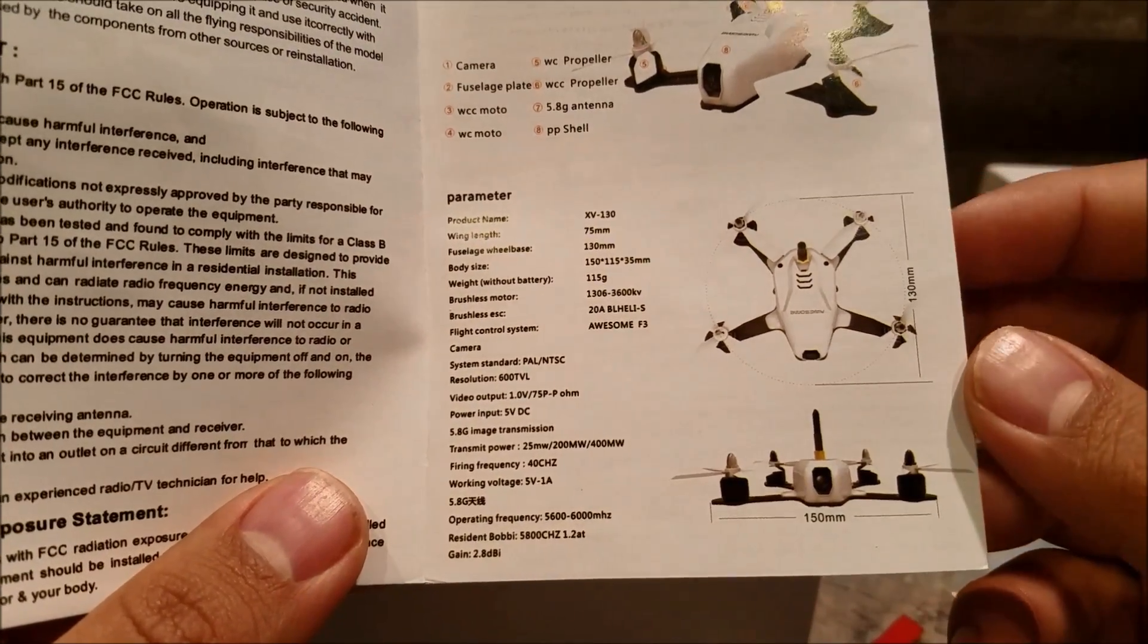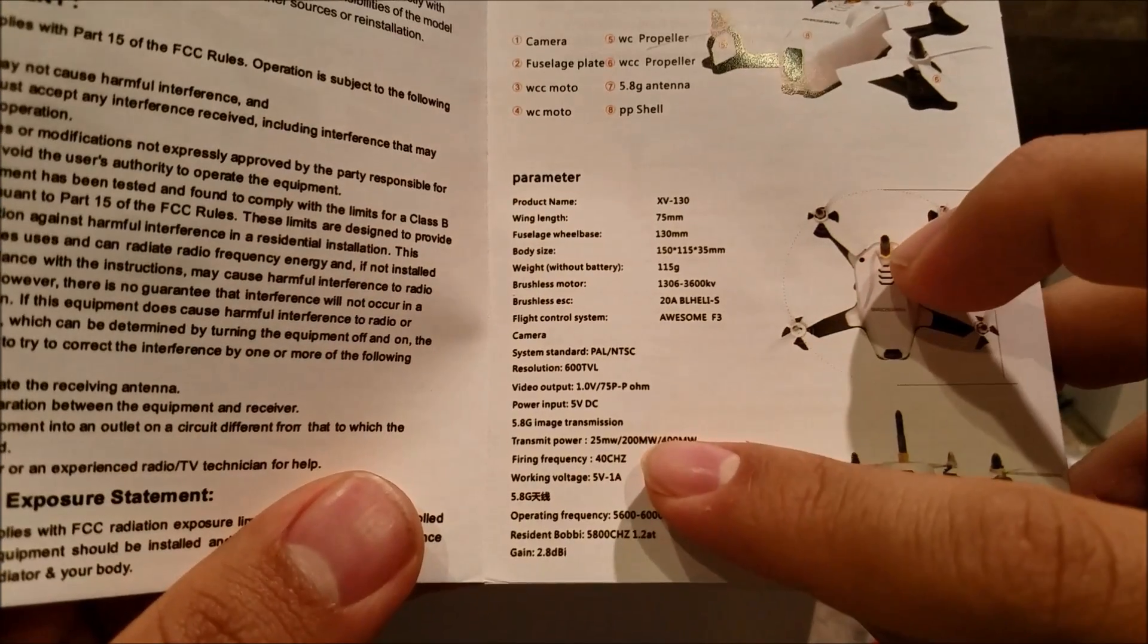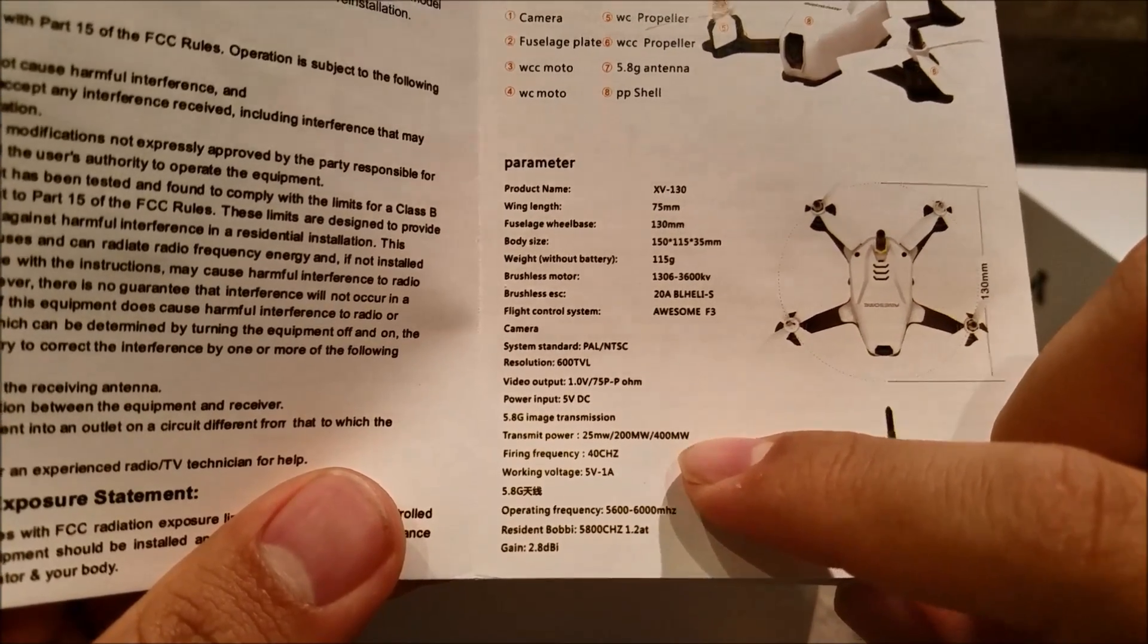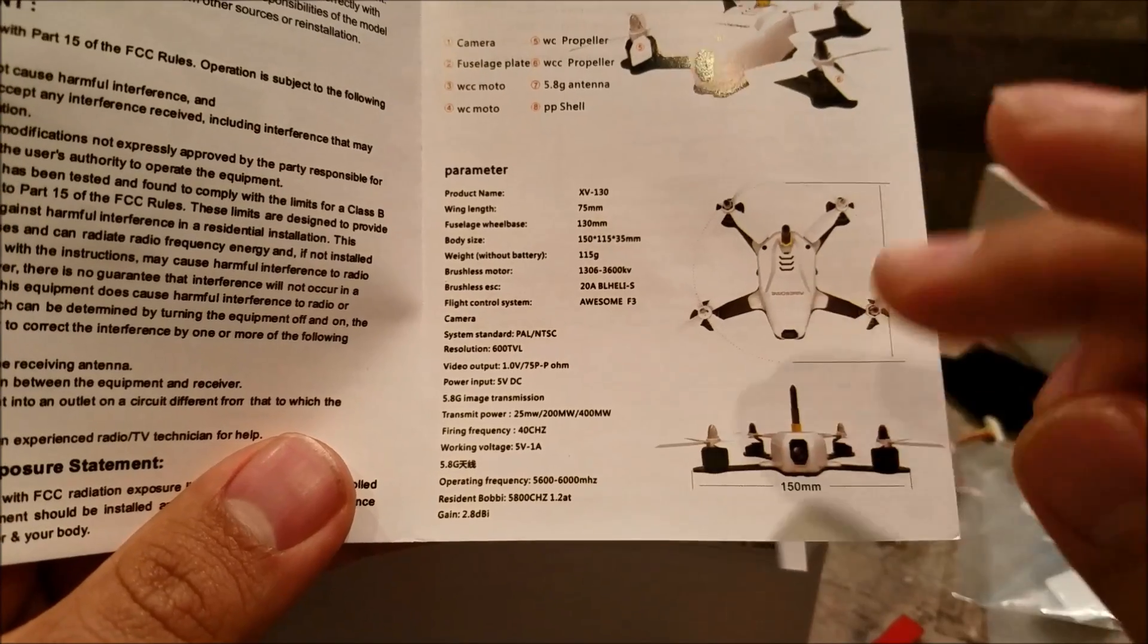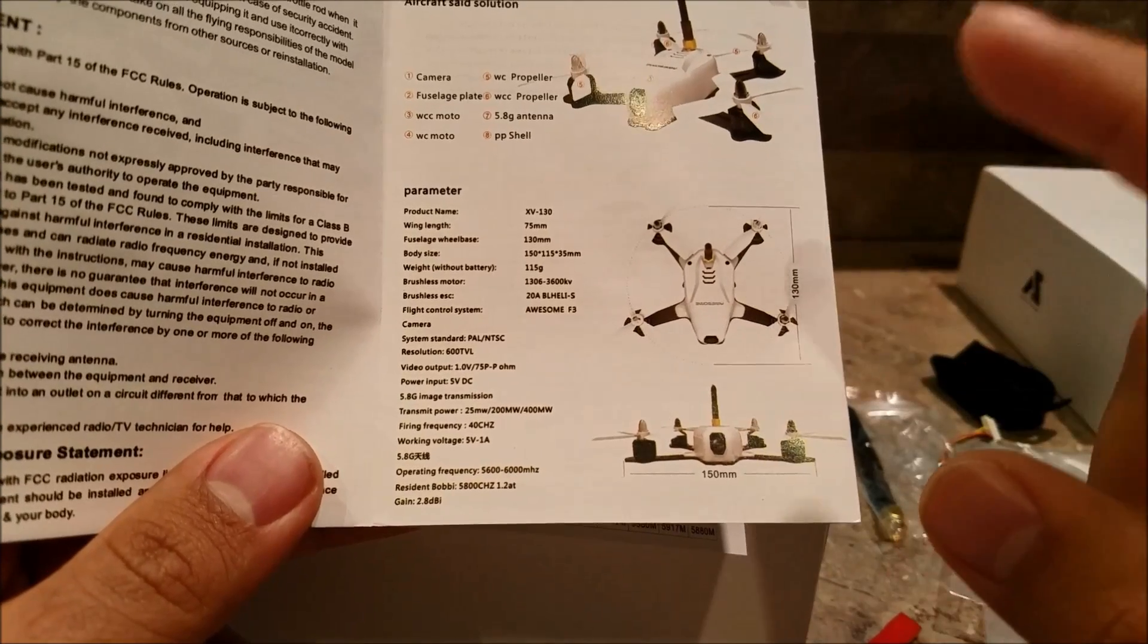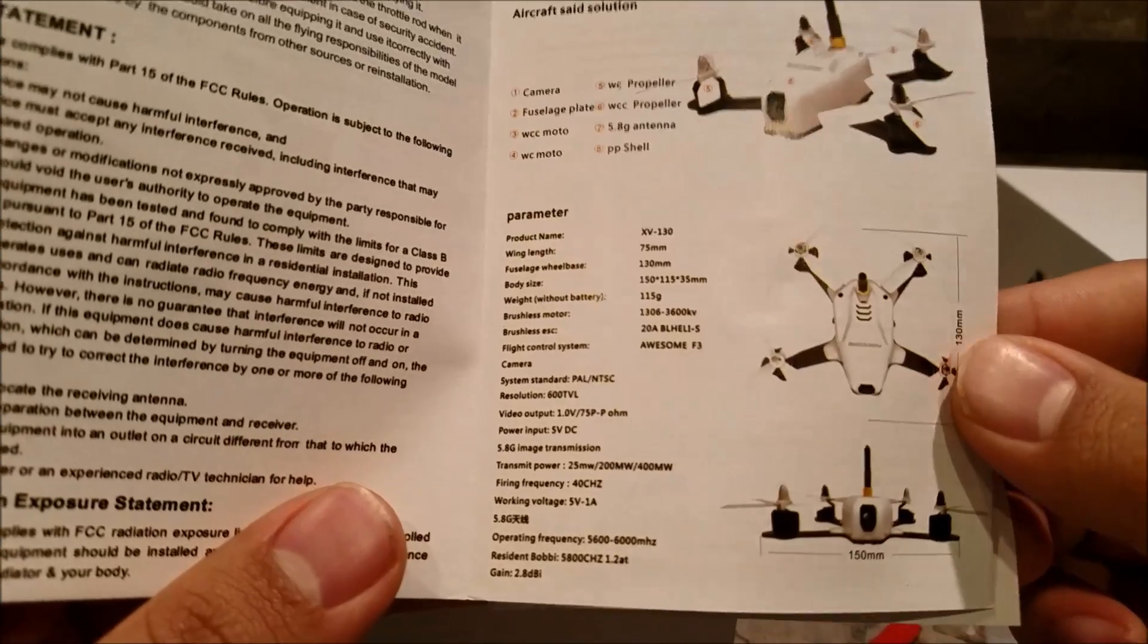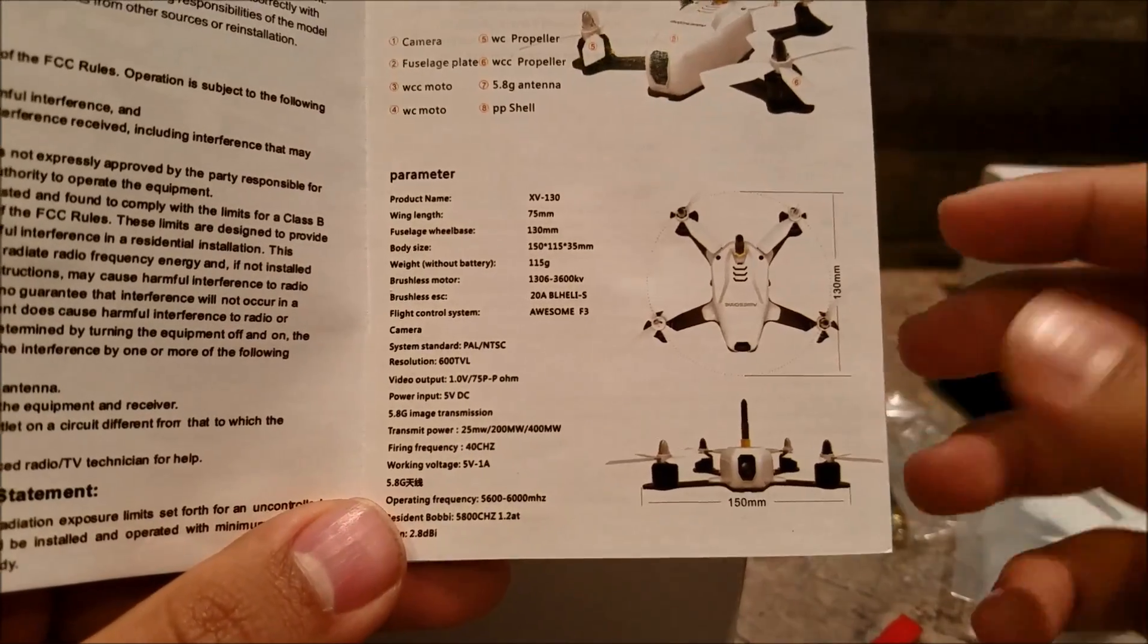This runs 1306 motors at 3600 KV. Without the battery it's about 115 grams which I did weigh and will show you on the scale. Wing length here is 75 millimeter. The model is the XV 130. It uses 5.8 gigahertz transmission which is apparently changeable - you can change it for where you're flying from 25 all the way up to 400 milliwatts, which is pretty interesting.